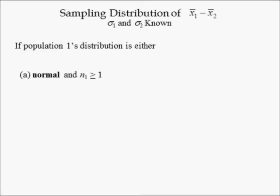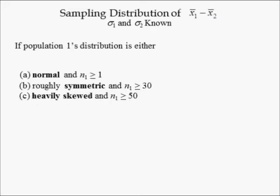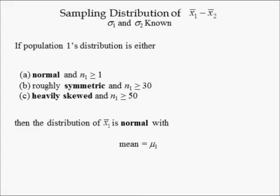Assuming the variances of a variable being studied in two different populations are known: if population 1's distribution is normal and the sample size is at least 1, or roughly symmetric and the sample size is at least 30, or heavily skewed and the sample size is at least 50, then the distribution of sample mean x-bar 1 is normal with mean equal to mu1 and standard deviation equal to sigma1 divided by the square root of the sample size.